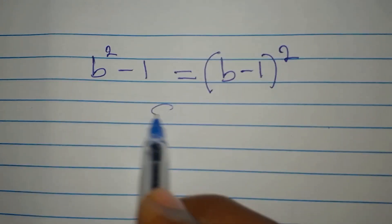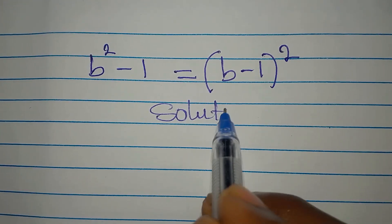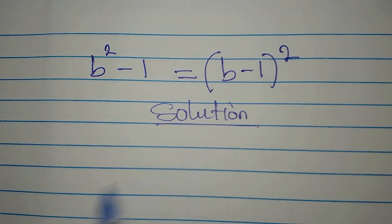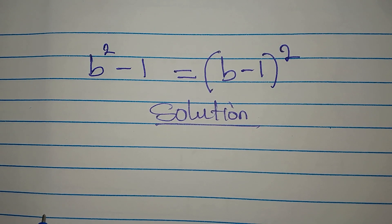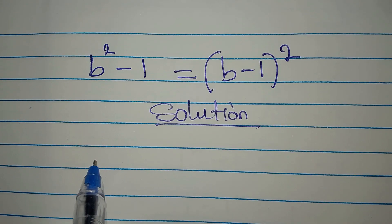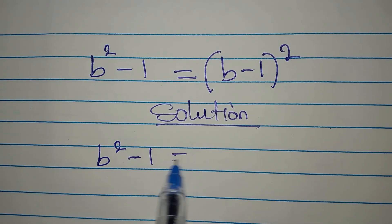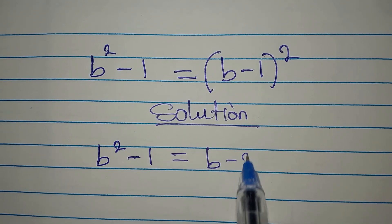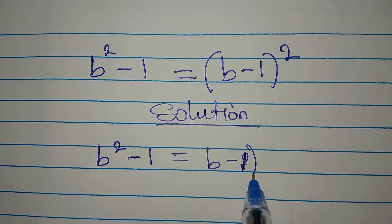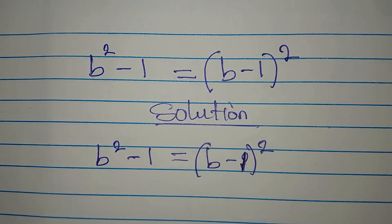Hello everyone. Okay, if you're here, let's deal with it. We have b to the power of 2 minus 1 equals b minus 1, this minus 1 still to the power of 2.